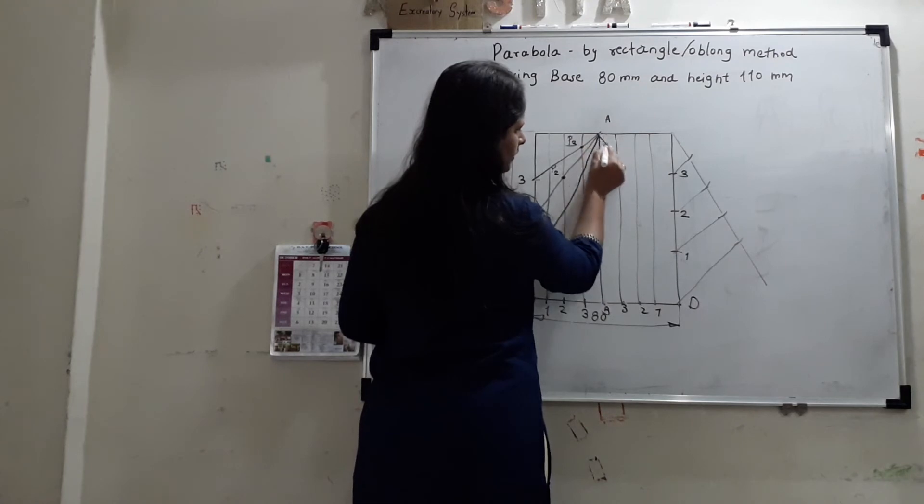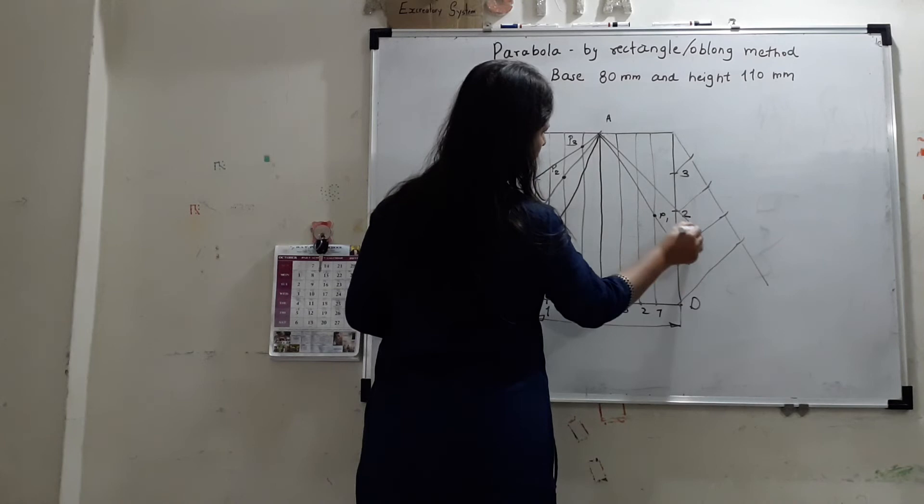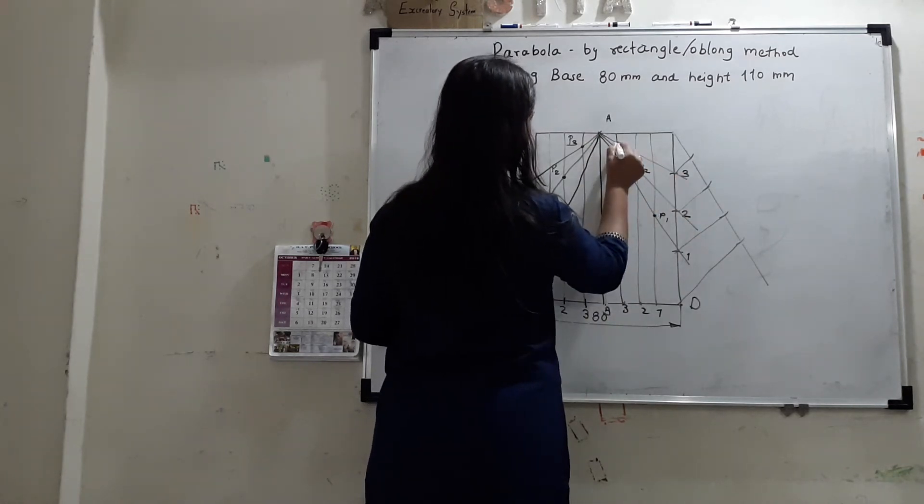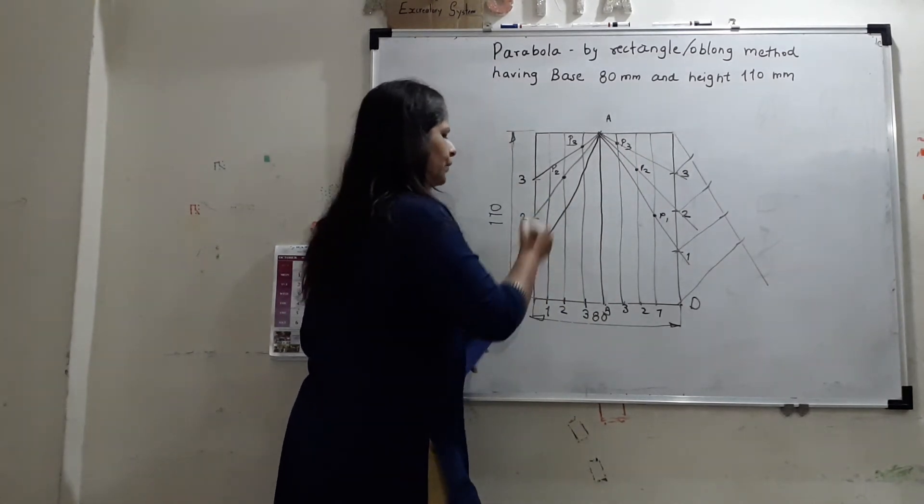Similar construction will go from this side. Like A to 1. So, I am getting B1 here. A to 2. So, I am getting B2 here. And A to 3. So, I am getting B3 here. And then, to join the curve, using the, going through this point, we will get a parabola.